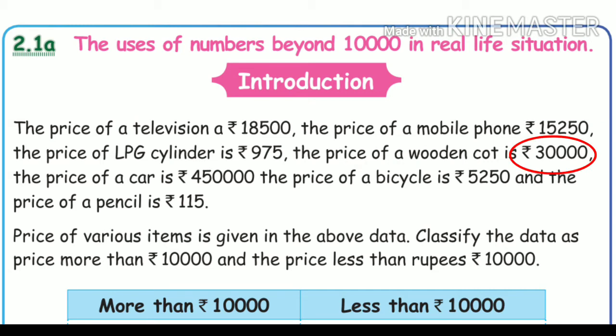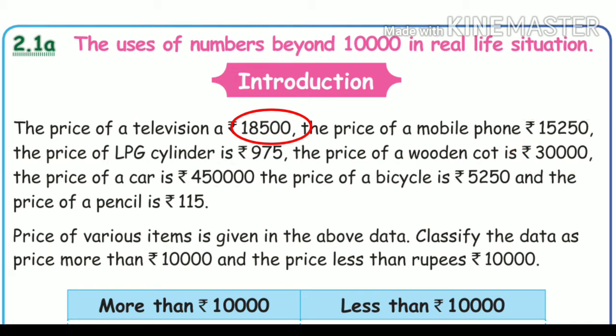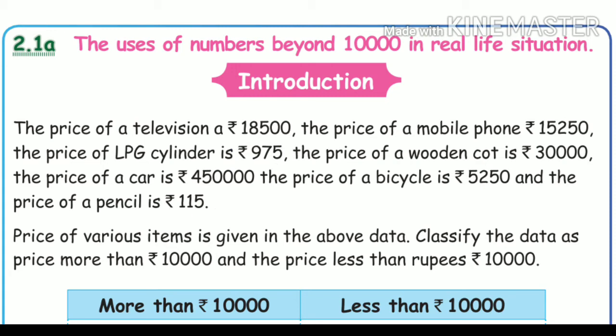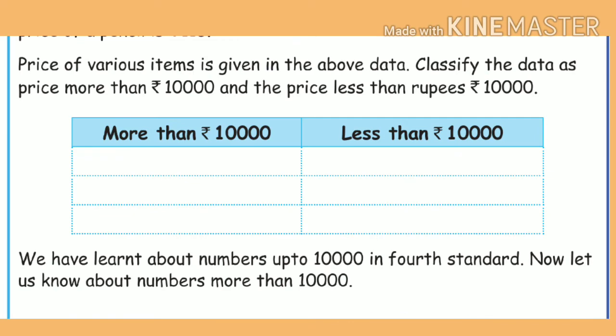The wooden cot at ₹30,000 and the car at ₹4,50,000 are also more than ₹10,000. Items more than ₹10,000: television, mobile phone, wooden cot, car. Items less than ₹10,000: LPG cylinder ₹975, bicycle ₹5,250, pencil ₹1,500. Write these in the given table on page 25.